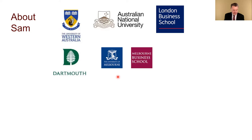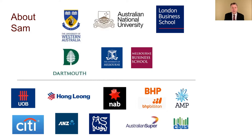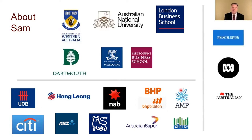I was a junior professor at Dartmouth for seven years, and then in 2004 we returned to Australia. Since then I've been a principal fellow at the Melbourne Business School. As well as being an academic, I've worked with very many companies — global banks like UOB, Citi, and Merrill Lynch, and lots of corporates. I've also done quite a bit of media: writing occasionally for The Australian, a lot with the ABC, and fairly regularly for the Australian Financial Review.